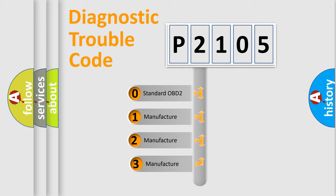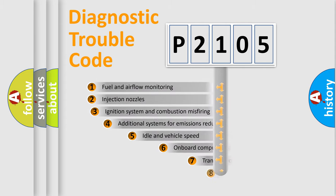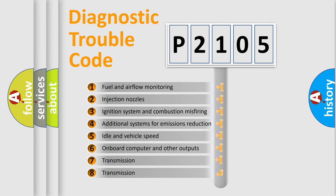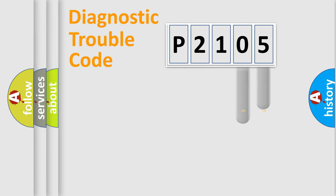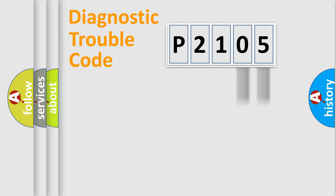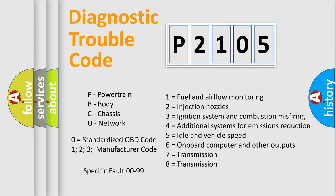If the second character is expressed as zero, it is a standardized error. In the case of numbers 1, 2, or 3, it is a manufacturer-specific expression of a car-specific error. The third character specifies a subset of errors. This distribution is valid only for the standardized DTC code, and only the last two characters define the specific fault of the group.